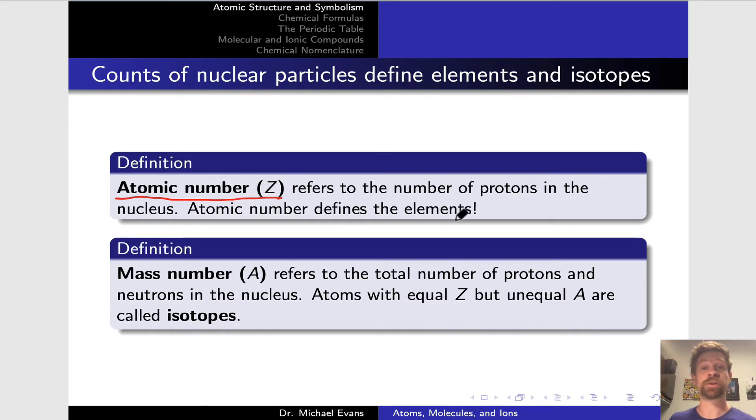This is simply the number of protons in the nucleus. Hydrogen has one, helium has two, lithium has three, etc. Atomic number defines the elements. All of the atoms of carbon, for example, that have ever existed and will ever exist have six protons in their nucleus. Having six protons in the nucleus is essentially the definition of carbon as an element.